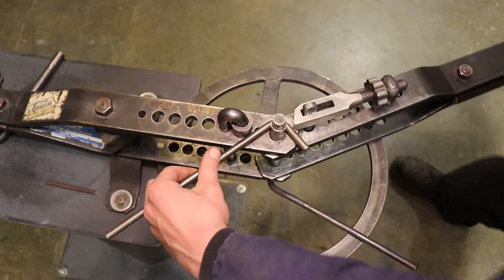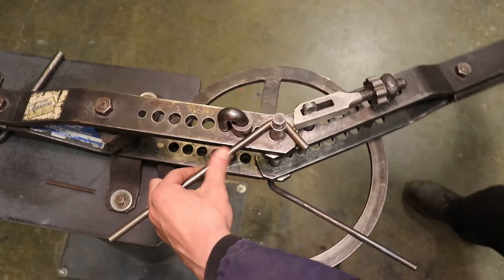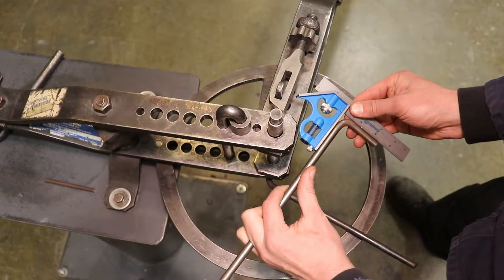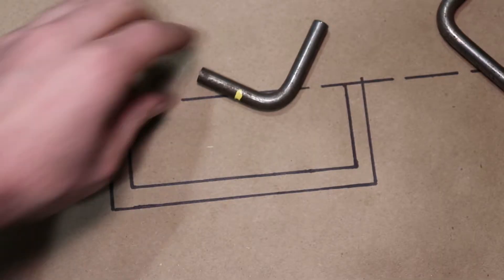So you can see I underbent it there. And so I just give it another little tweak with the handle until I dial it in, get it right onto that 90 degree mark, which is what I'm looking for.